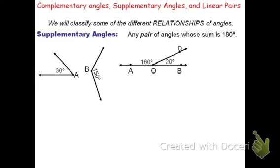You can also have supplementary angles like this. In this case you can't just say angle O because it's not specific enough. Angle AOD, or angle DOA, is 160 degrees. Angle DOB, or angle BOD, is 20 degrees. These are also supplementary angles because 160 degrees plus 20 degrees is 180 degrees.